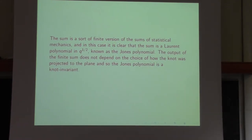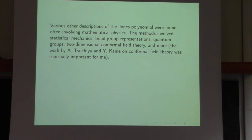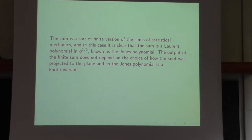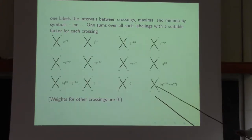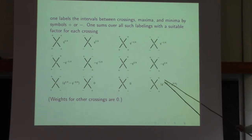What's special about these particular weights is that the output of the final sum does not depend on the choice of how the knot is projected to the plane, so the Jones polynomial is a topological invariant. It's a little mysterious that these particular weights lead to a knot invariant. If you have reason to suspect it's true, the proof isn't that long — you have to check a few of the Reidemeister moves.